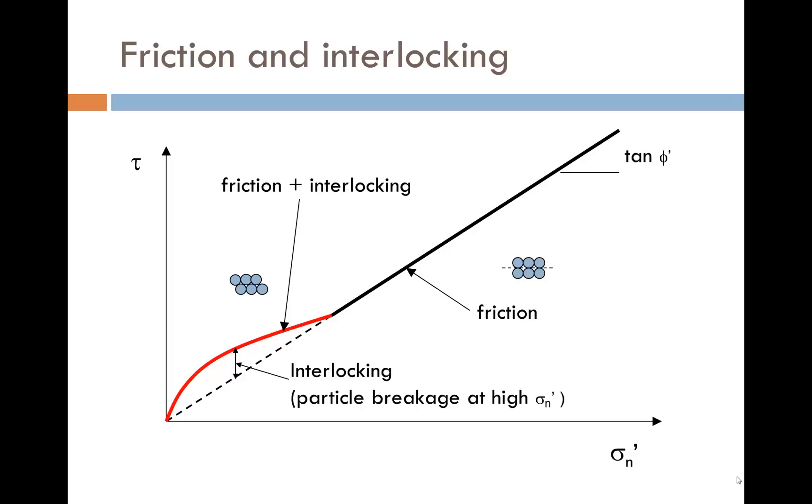Therefore, on a plot of tau against sigma n dash, the limiting frictional resistance is the black line with slope tan phi dash. However, at low normal stresses, you will see that particle interlocking also contributes to the shear strength as shown in red. At higher normal stresses, the shear strength is purely derived from friction.